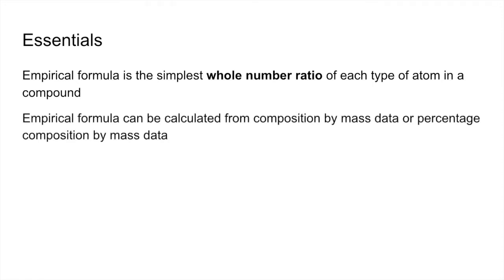Empirical formula can be calculated from composition by mass data or percentage composition by mass data. Molecular formula is the actual number of each type of atom in a compound.